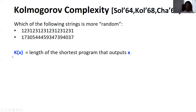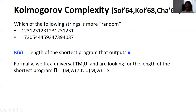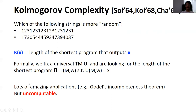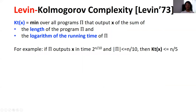For any string X, we let K(X) denote the length of the shortest program that outputs X. More formally, we fix a universal Turing machine U, and we look for the length of the shortest program pi, which consists of M and W, such that U on inputs M and W will output the string X. The notion of Kolmogorov complexity has many amazing applications, such as proving Gödel's incompleteness theorem, but unfortunately it is uncomputable.